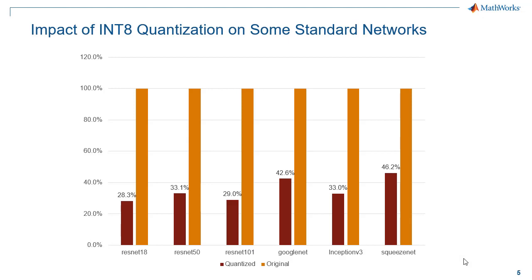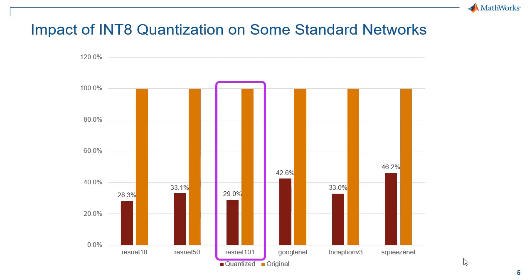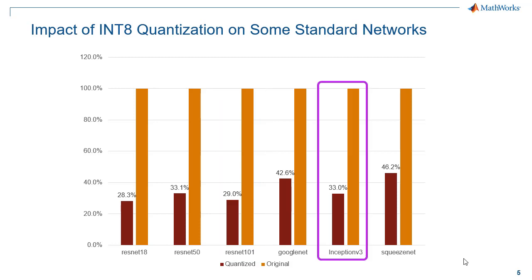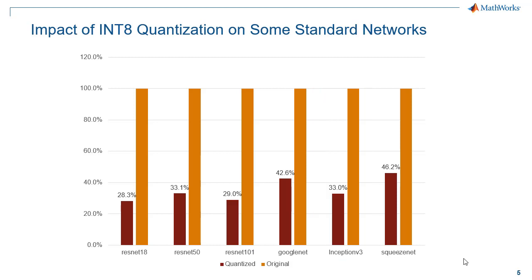We repeated this workflow with a few networks, only quantizing the compute-intensive convolutional layers to INT8. You can see the impact of quantization in the chart here. For instance, the largest network here with 180 MB in memory, ResNet101, sees 72% compression with a 2% drop in accuracy. Inception V3, on the other hand, has the largest drop in accuracy of 4% with 67% compression, going from 100 MB to 33 MB in memory. This highlights the significant impact of quantization for efficient deployment of deep learning networks.